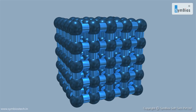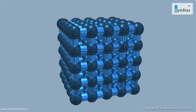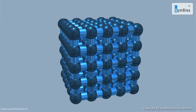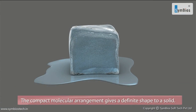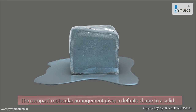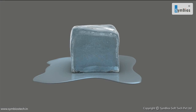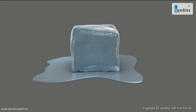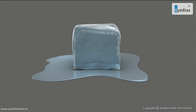Due to these strong forces, the molecules in a solid can hardly move away from each other. The compact molecular arrangement gives a definite shape to a solid. The shape of a solid is retained as the molecules do not alter their position much.